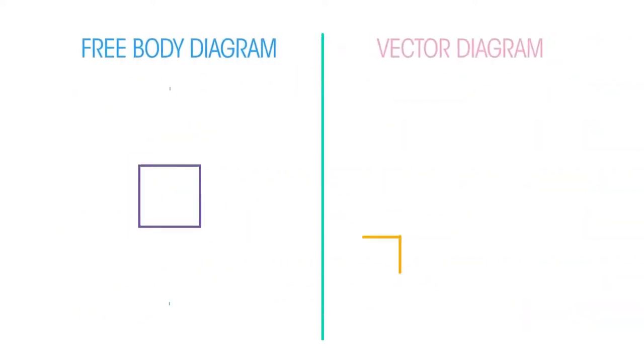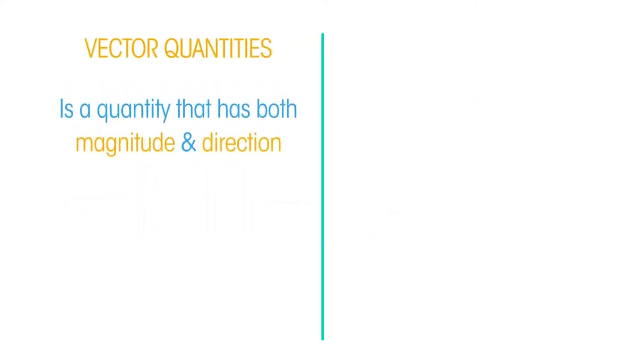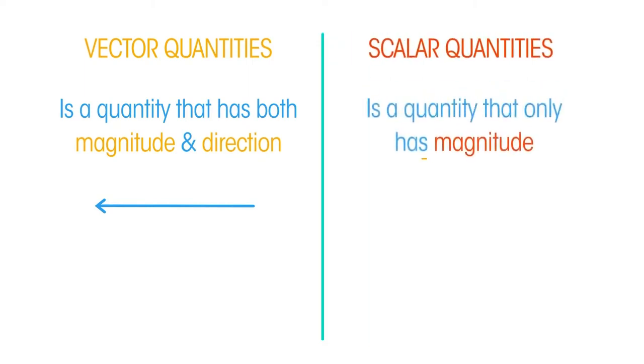In this video, we will learn how we can use free body and vector diagrams to describe forces. Forces are vector quantities because they have both magnitude and direction, and so can be represented by an arrow. Scalar quantities have only magnitude and no direction.